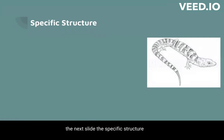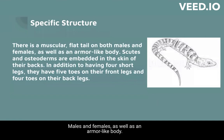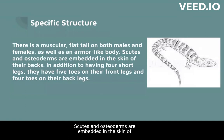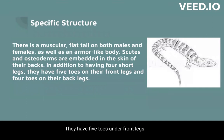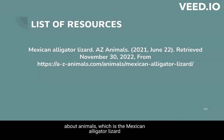The specific structure: there is a muscular, flat tail on both males and females, as well as an armor-like body. Scutes and osteoderms are embedded in the skin of their backs. In addition to having four short legs, they have five toes on their front legs and four toes on their back legs. I hope you guys enjoyed our mini-lecture about animals, which is the Mexican alligator lizard.